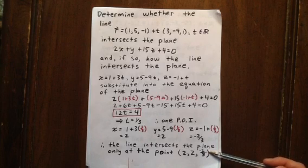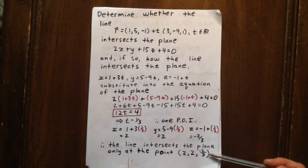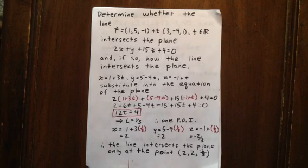And therefore, we see the line intersects the plane only at one point, specifically 2, 2, negative two-thirds. Alright.